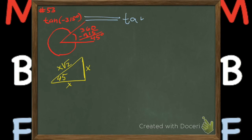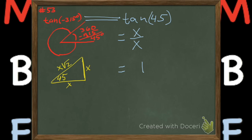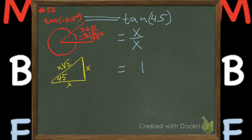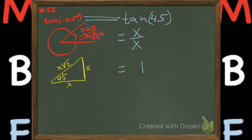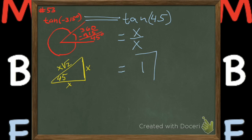We determine that the tangent of 315 is the same as the tangent of 45, which is x over x, which equals 1. But you've probably already memorized those.